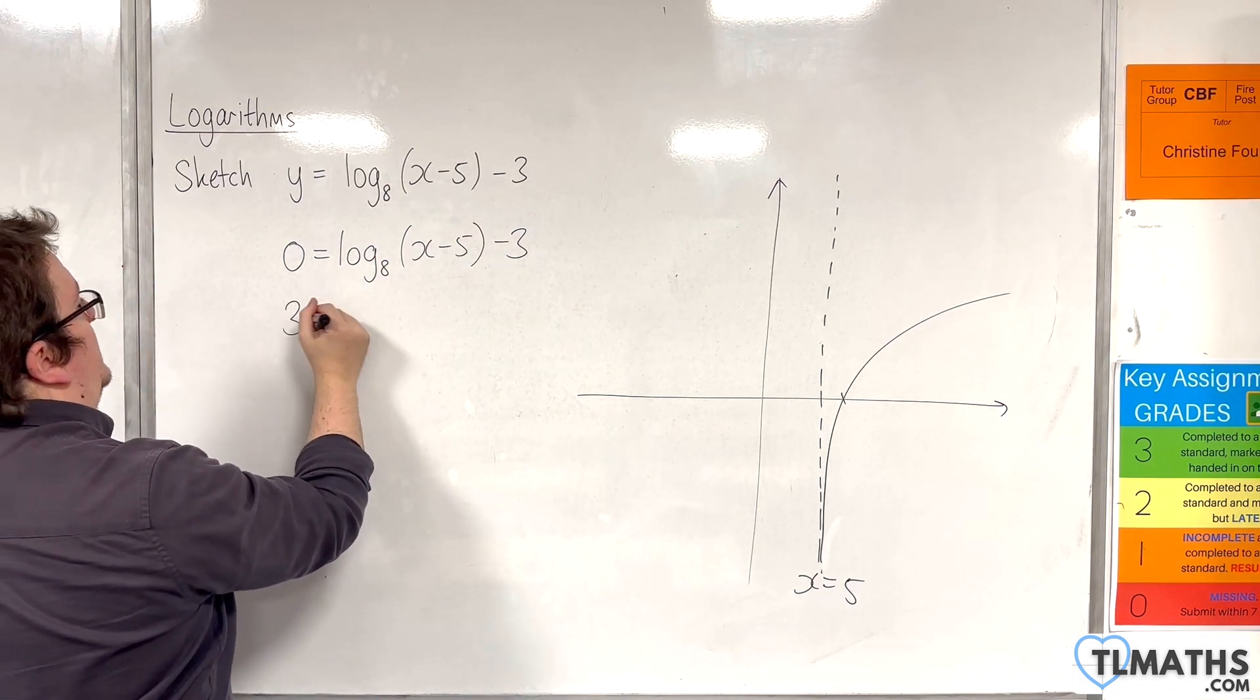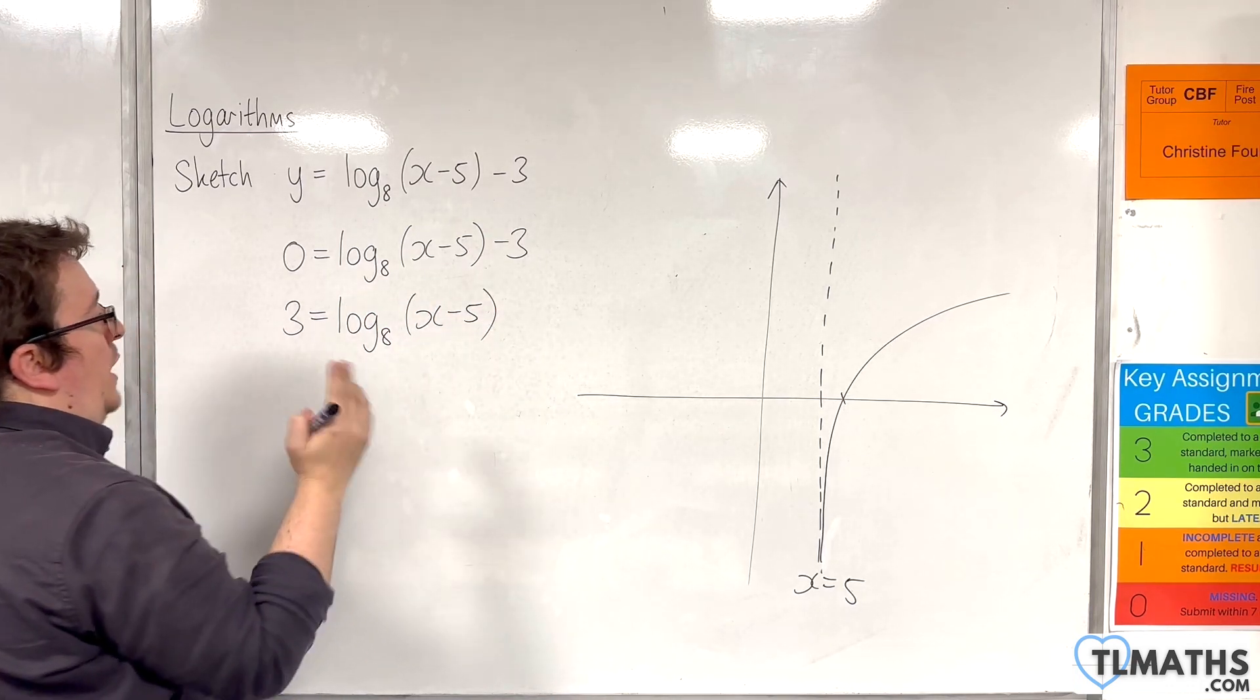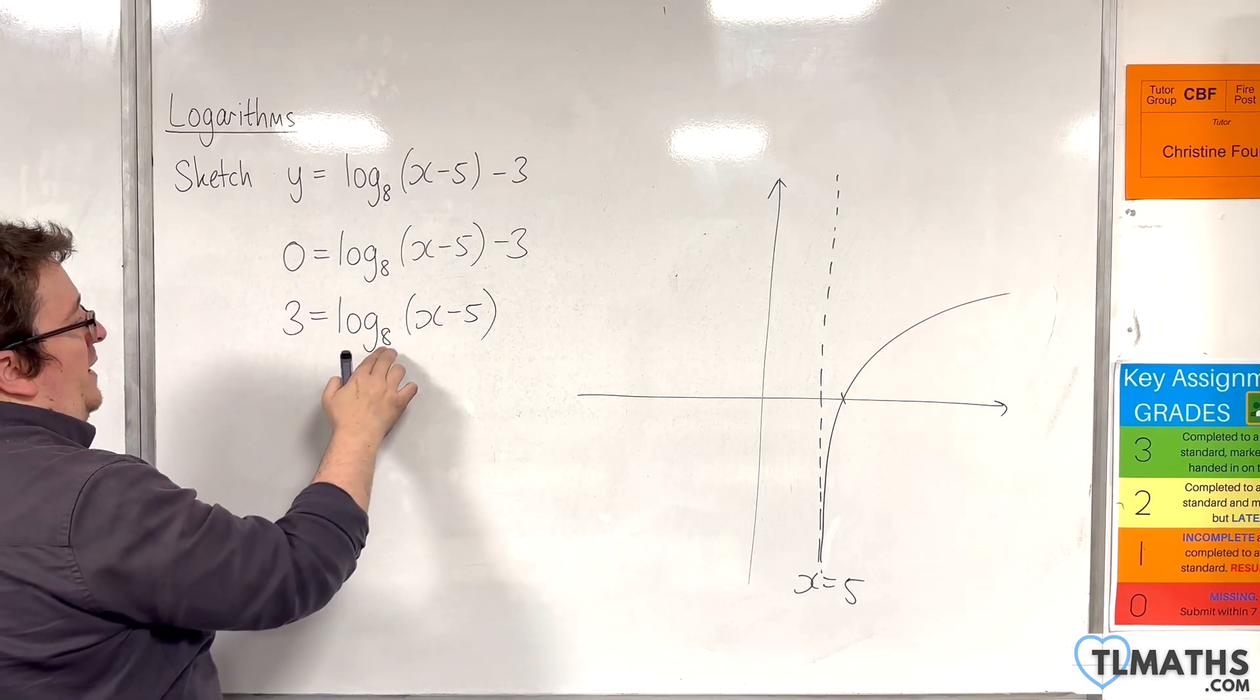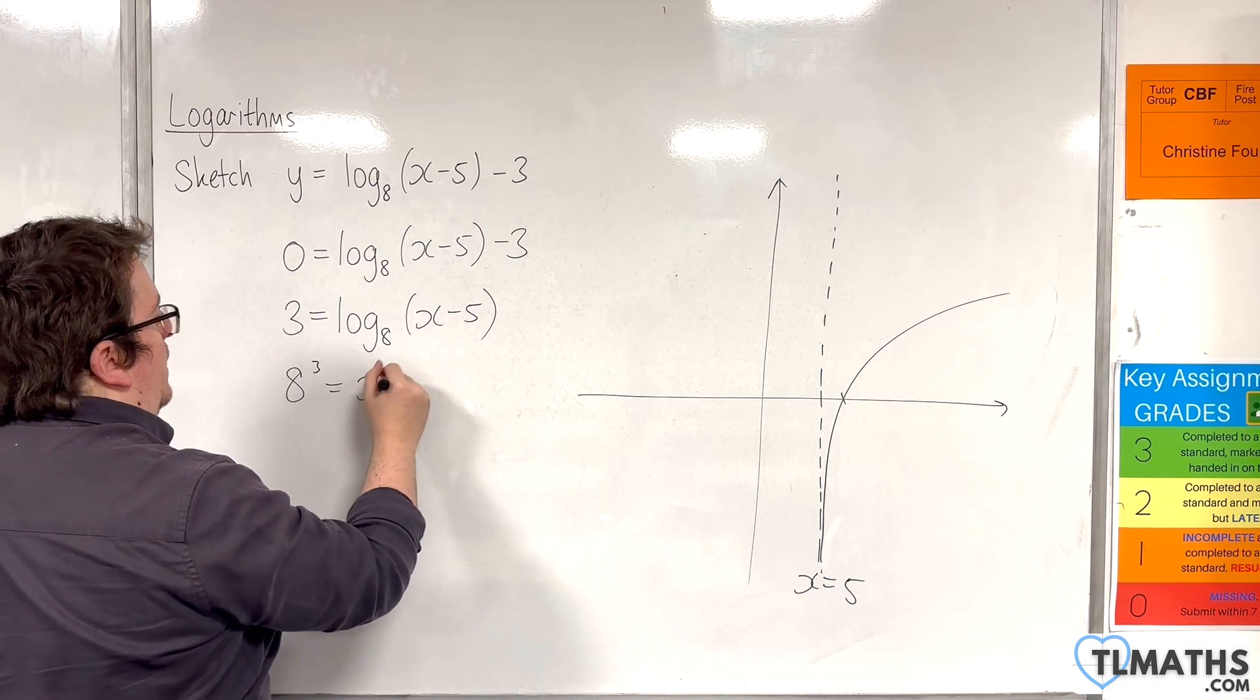Add the 3 to both sides. And then going from logarithmic form to exponential form, 8 to the power of 3 is the x take away 5.